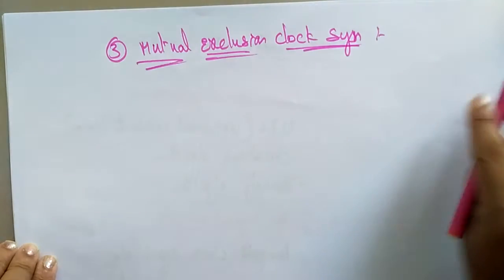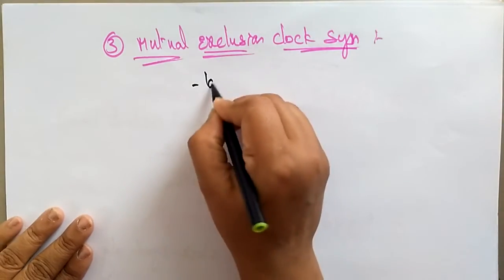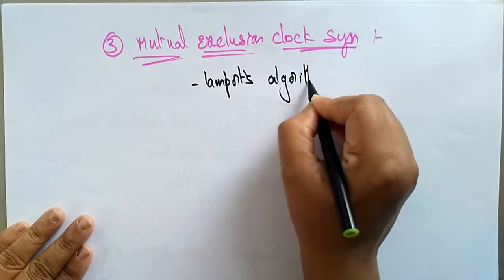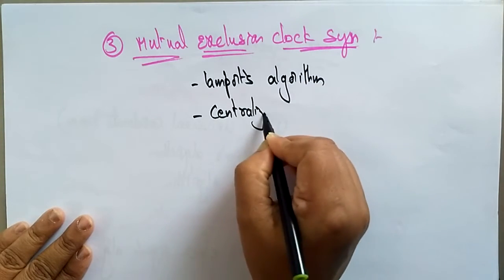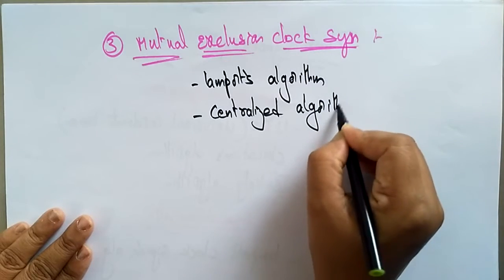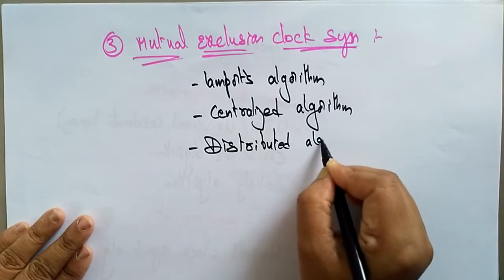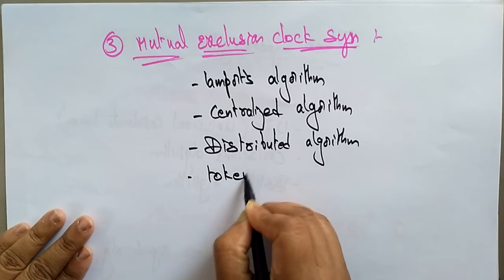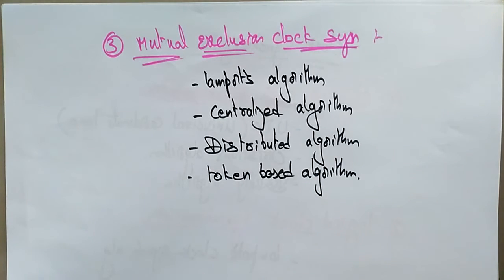The algorithms we use for mutual exclusion clock synchronization are: Lamport's algorithm, centralized algorithm, distributed algorithm, and token-based algorithm.